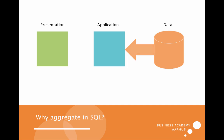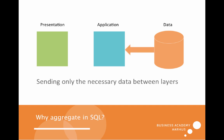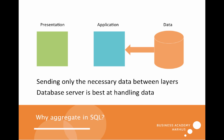But it would be more adequate to send exactly what is needed — only the necessary data. So typically we will only send what we need at the application layer and pass that to the presentation layer, because the database server is best at handling data. It has more advanced and optimized processes for processing data.